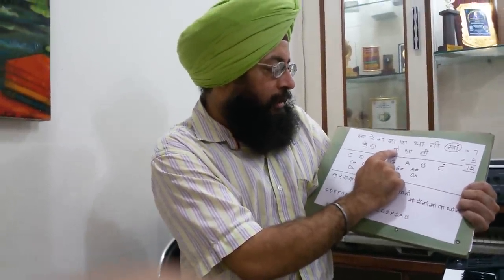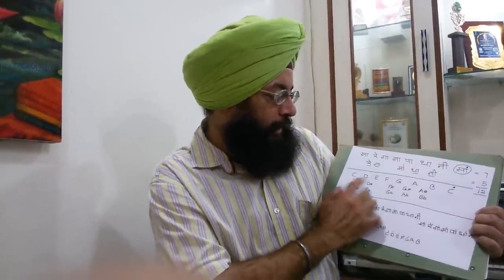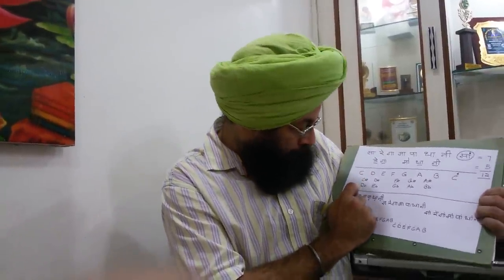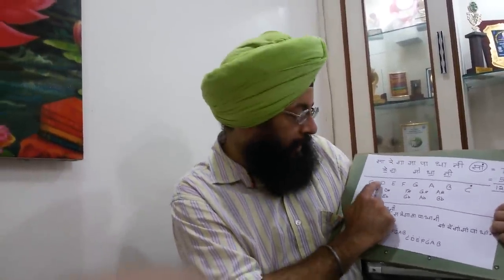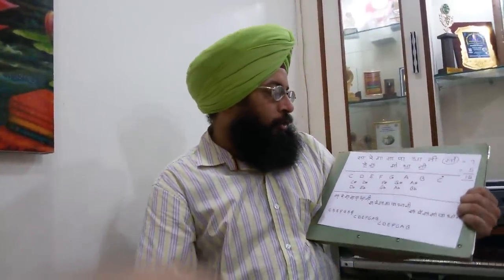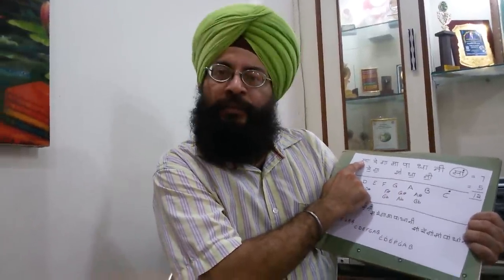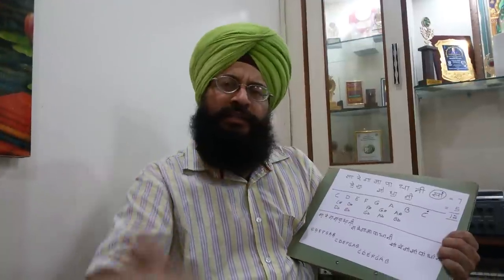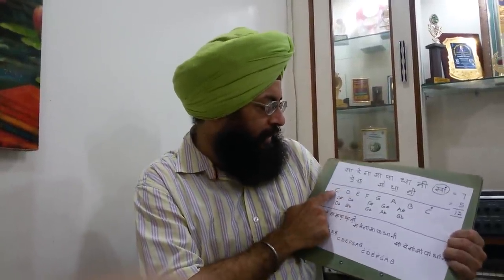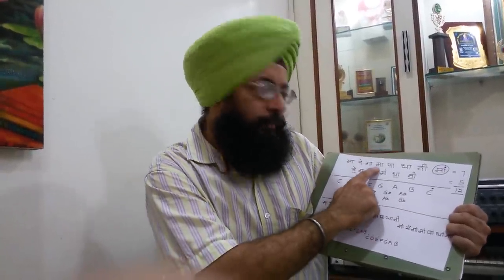Tevra is very much similar to — or we can say a synonym for — the sharp note, and Komal is a synonym for the flat note. You can clearly see that between C and D we have C sharp or D flat. Similarly, between D and E we have D sharp, which is a half note above D — that is why it is sharp — or E flat. Sa is a flexible note; you can take any note as Sa. So if we take C as Sa, then D would be Re, E would be Ga, F would be Ma, and so on.